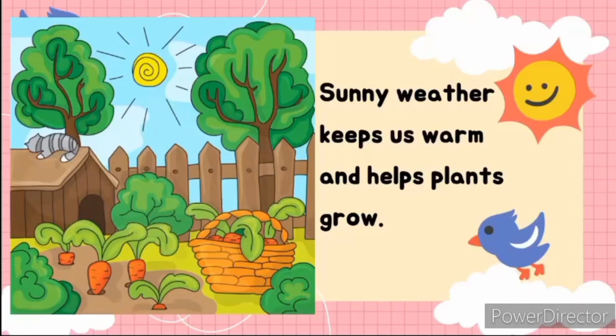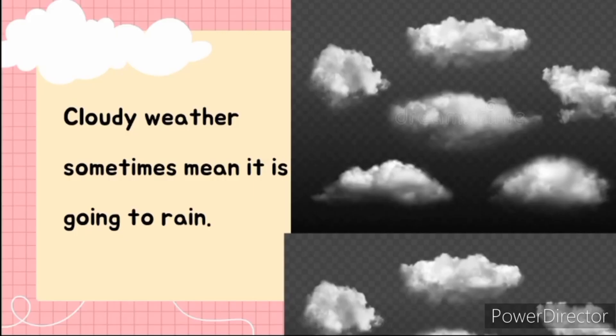Sunny weather keeps us warm and helps plants to grow. On the other hand, cloudy weather sometimes means that it is going to rain. I believe you've seen some very dark clouds in the sky and thought, 'Oh, it's about to rain!' Yes, that is what cloudy weather means.